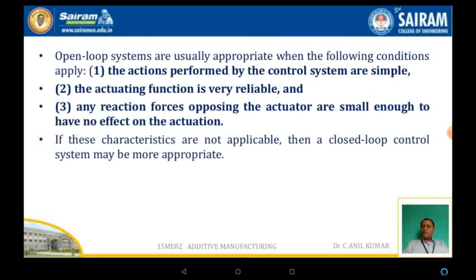Open loop systems are usually appropriate when the following conditions apply. The first is that the actions performed by the control system are very simple. The second is that the actuating function is very reliable. The third is that any reaction forces opposing the actuator are small enough to have no effect on the actuation. If these three characteristics are not satisfied or not applicable, then we have to go for closed loop control systems.